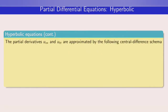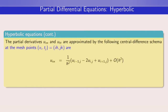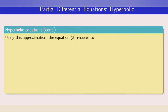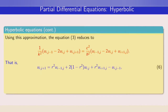The partial derivatives ∂²u/∂x² and ∂²u/∂t² are approximated by the central difference scheme at mesh point (i, j). The approximation of ∂²u/∂x² has error of order h², and the approximation of ∂²u/∂t² has truncation error of order k². These expressions are valid for all i = 0, 1, 2, … Using this approximation, the given hyperbolic equation becomes a finite difference expression, which after simplification reduces to equation 6.